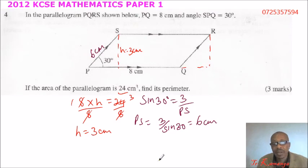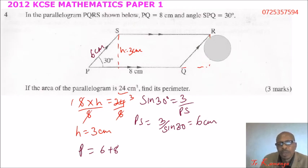Now it is now easier to get the perimeter. Perimeter is equal to 6 plus 8, that is this side here plus this one, and we multiply by 2 here.